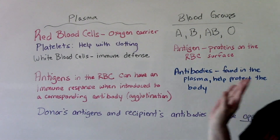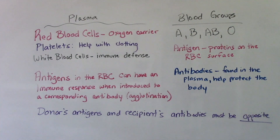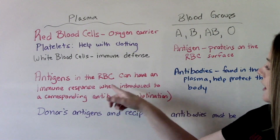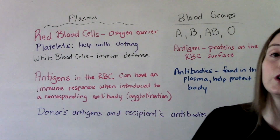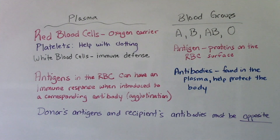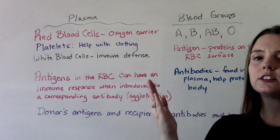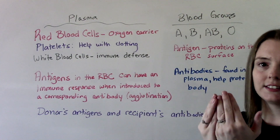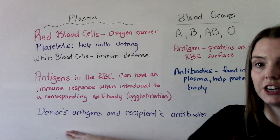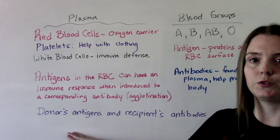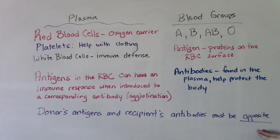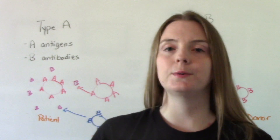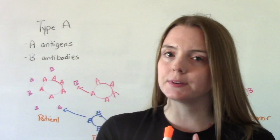This is how the body protects itself, but sometimes there can be issues. The antigens in the red blood cells can trigger an immune response when introduced to a corresponding antibody — the word for that is agglutination. So an A antigen and an A antibody don't like each other. The donor's antigens and the recipient's antibodies must be opposite.